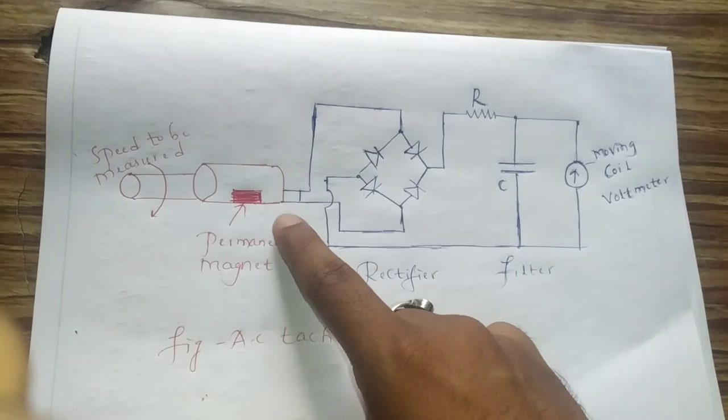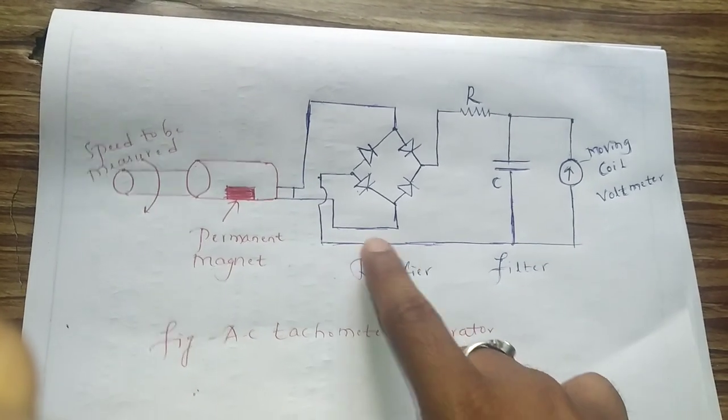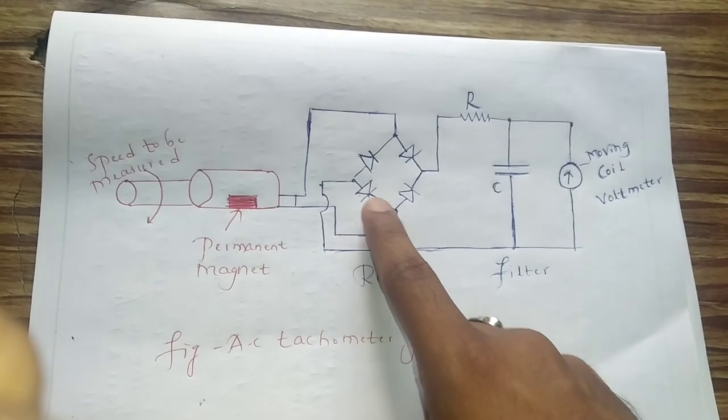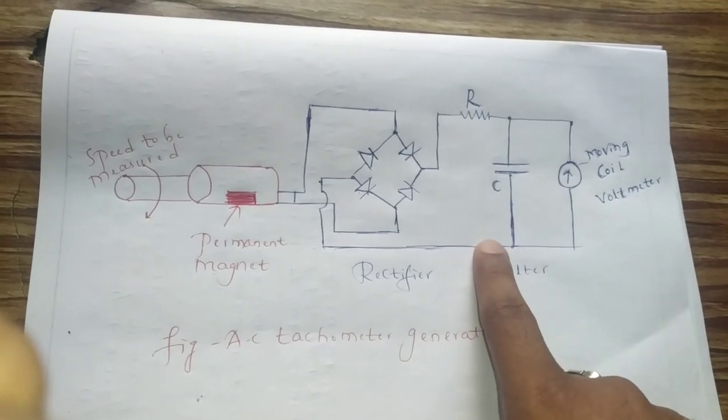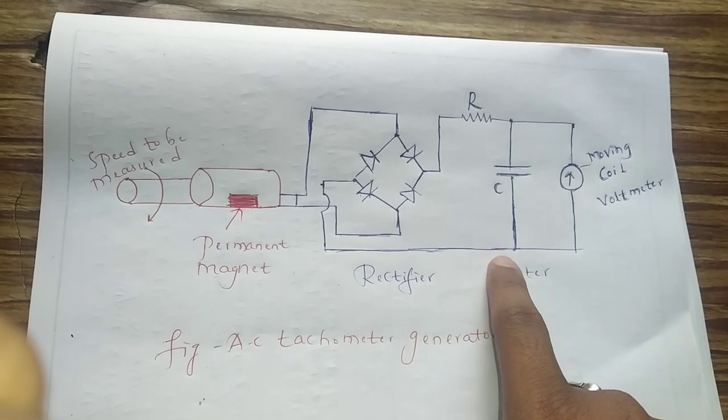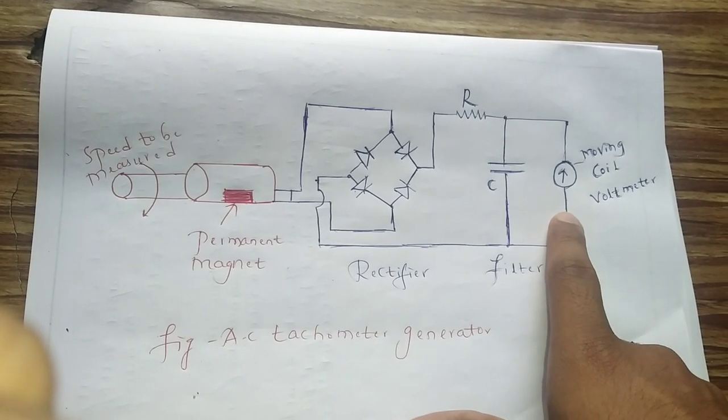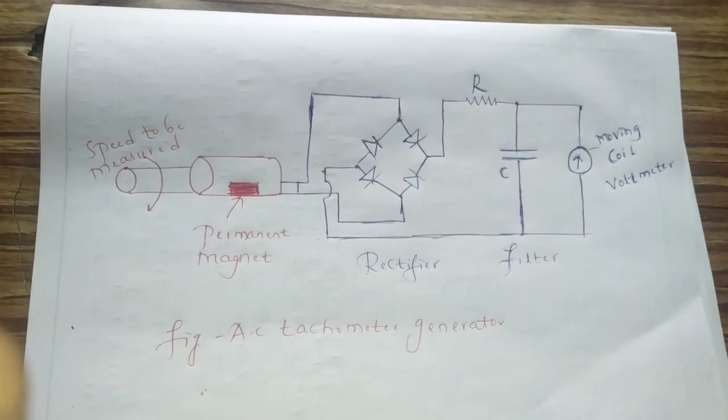The AC voltage generated is rectified using fuller rectifier and filtered to remove ripples. The DC output voltage is then measured using moving coil voltmeter.